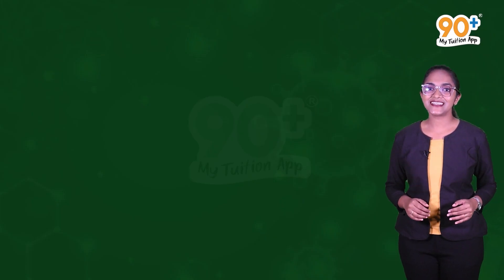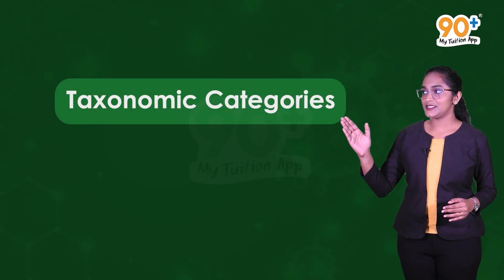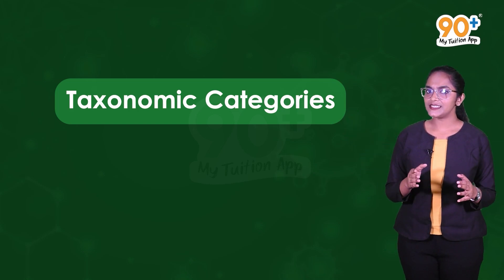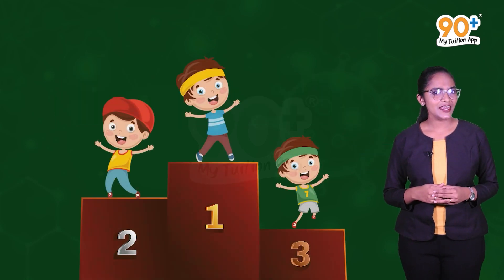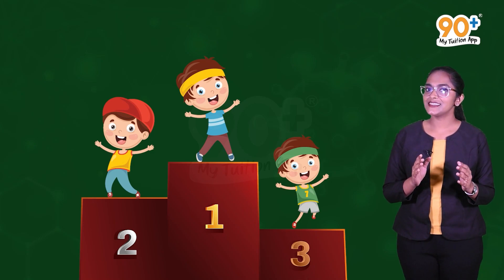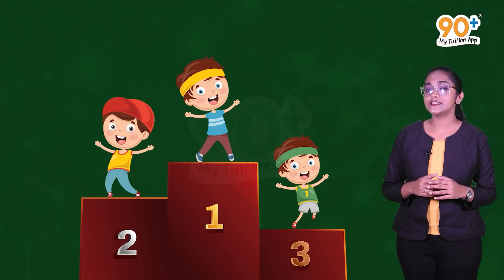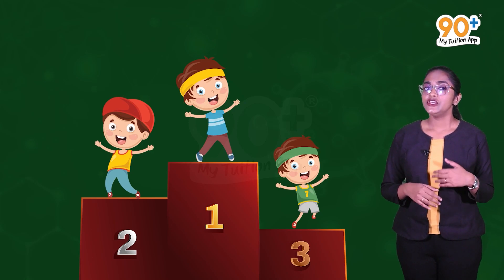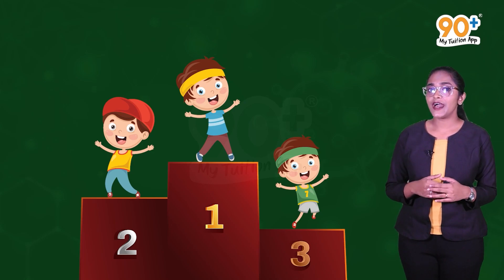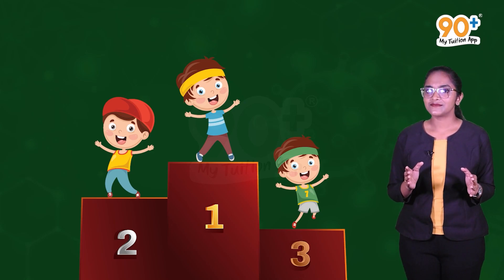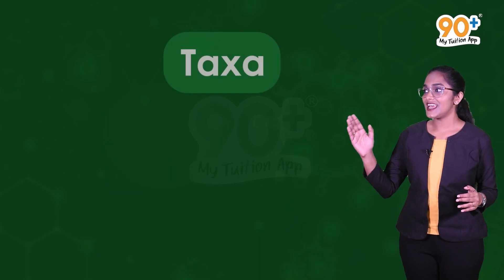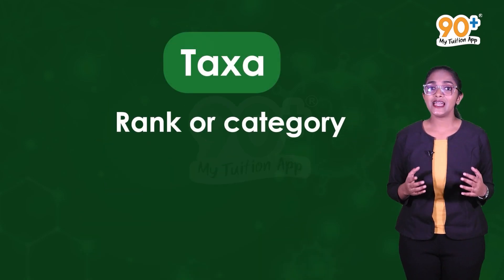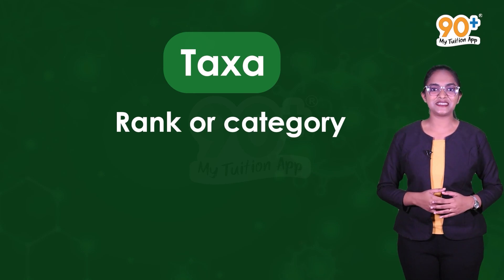Next, we will be discussing taxonomic categories. Imagine participating in a race, and at the end of it, you will get positions on the basis of your performances. You will be classified on the basis of your speed. Just like that, a taxon is a rank or category that helps us to classify organisms.